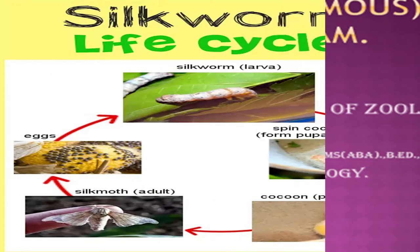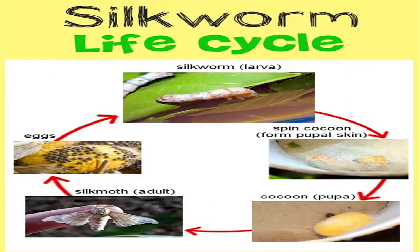The life cycle of silkworm involves four stages. The first stage is the larva, then the pupa stage, then cocoon, then adult, and then it again lays the eggs.